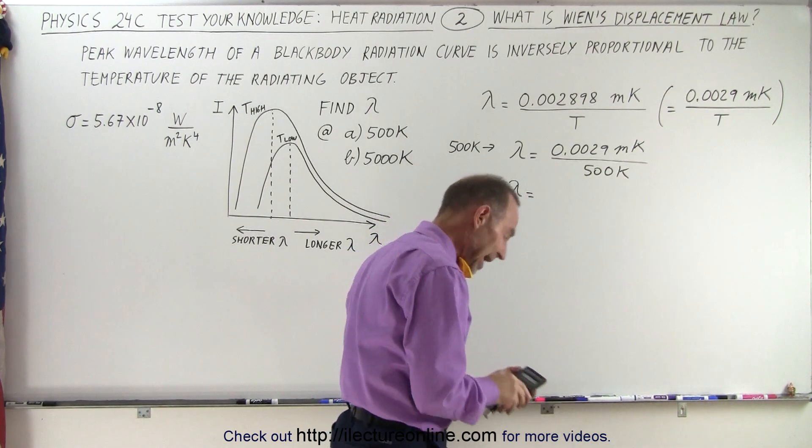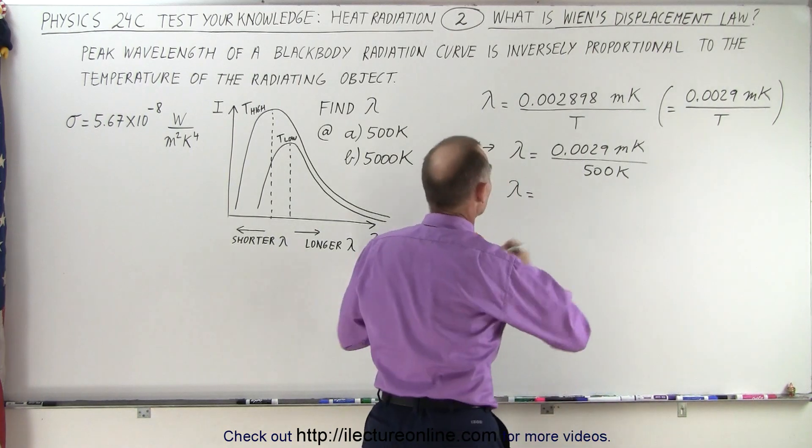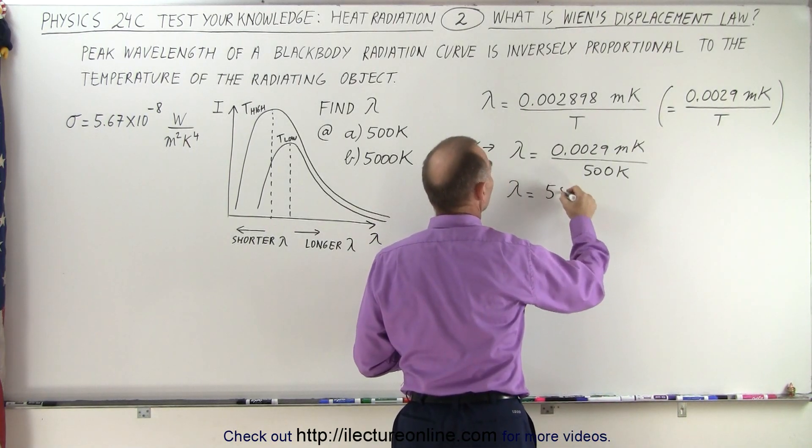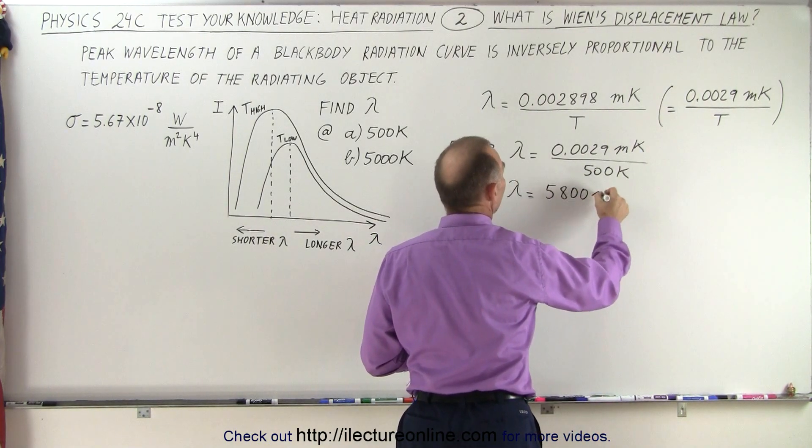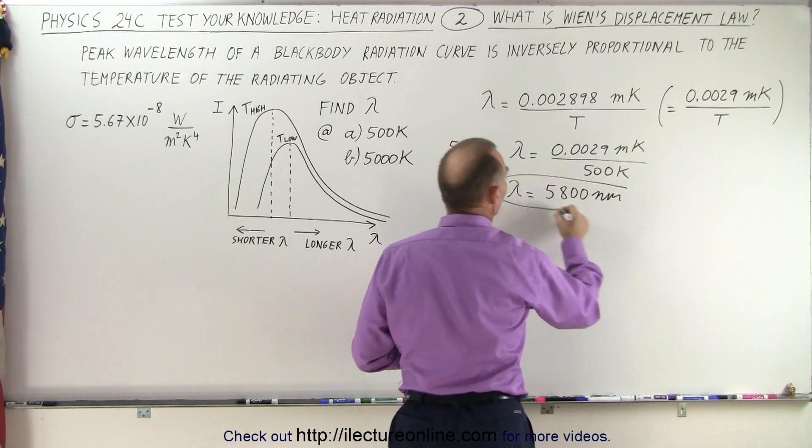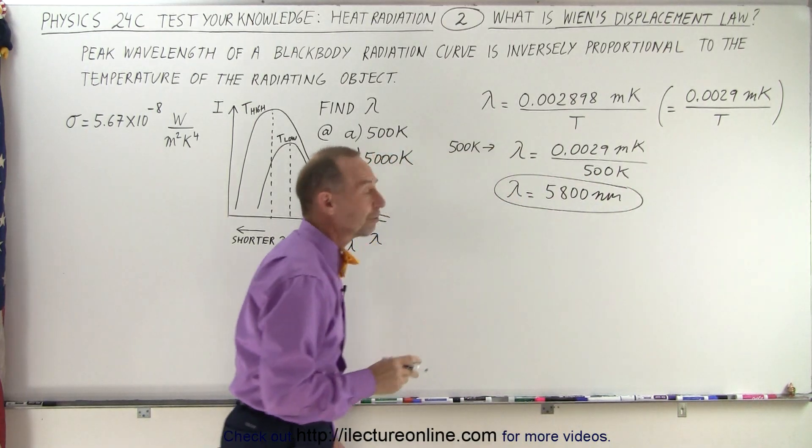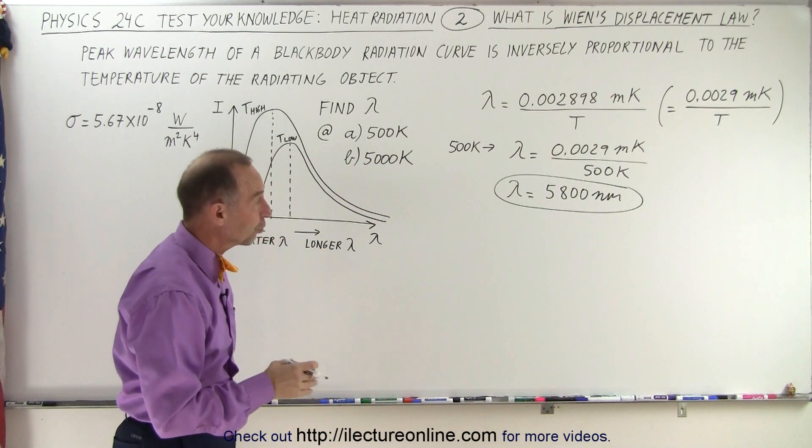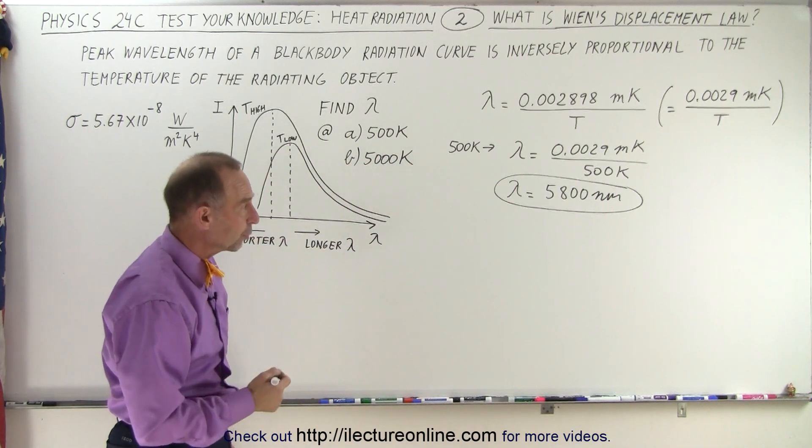That would be 5.8 micrometers, so it would be 5,800 nanometers at a temperature of 500 Kelvin. Of course, 5,800 nanometers would be in the infrared wavelength.